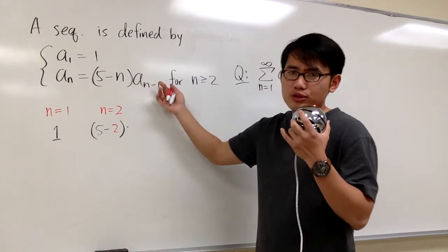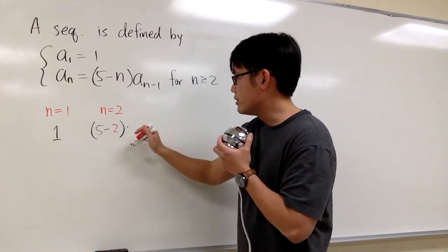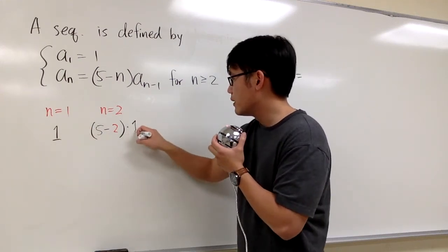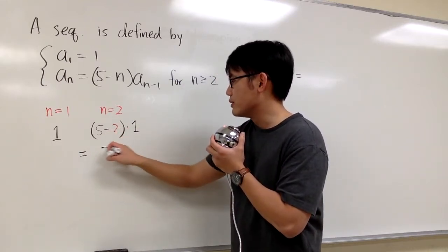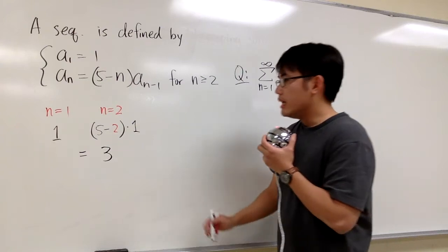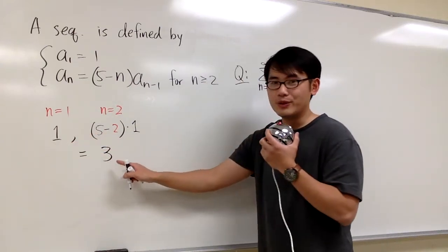And remember, this notation just means we multiply by the previous term. So, we just need to multiply by this one. And let's go ahead and work this out. 5 minus 2 is 3, 3 times 1 is 3. Okay? So the first term is 1, the next term is 3.